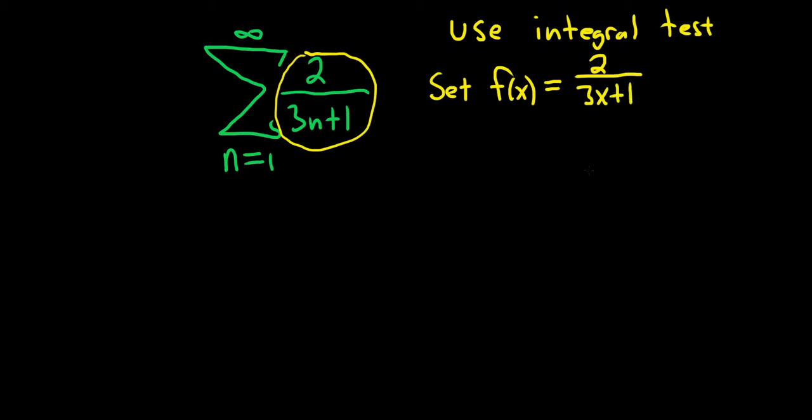The second step is to at least state the conditions of the integral test to make sure it applies. Now how much justification you show here depends on what you're doing this for. The first condition is to notice that it's positive for x greater than or equal to one. So f is positive. I usually just state this condition for x greater than or equal to one. Usually it's pretty obvious. You can tell everything is positive here.